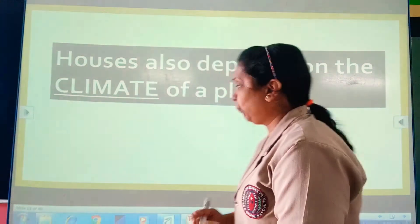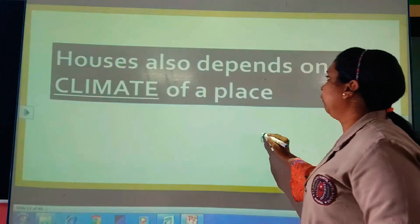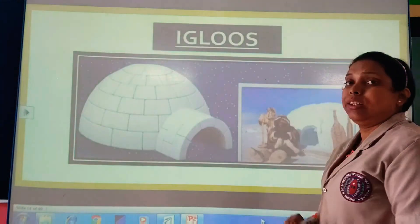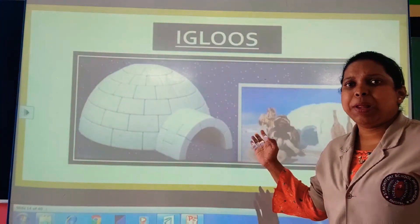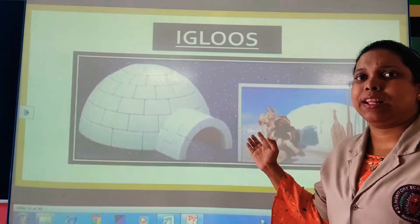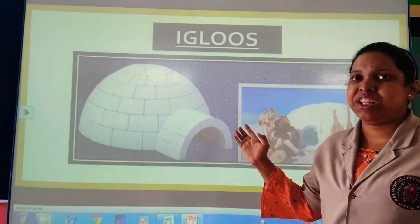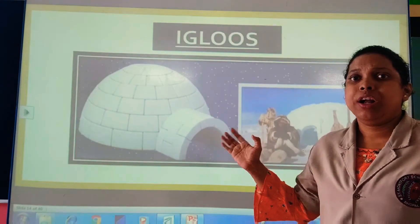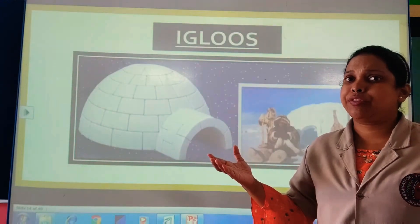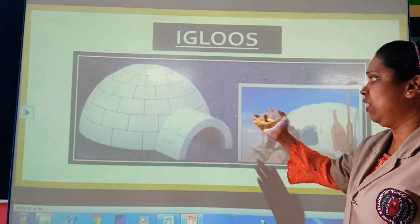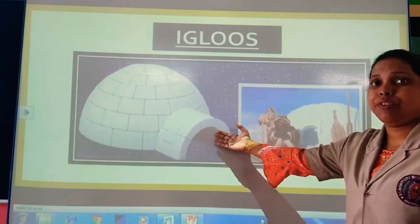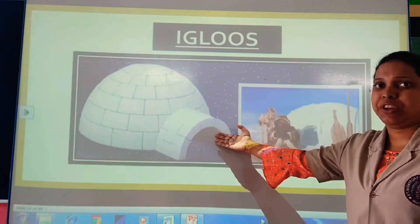The first type is the igloo. Everybody might have seen this in movies or when watching Discovery. This is the picture of an igloo.